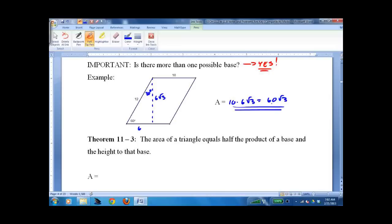Or I can say this is the base, and I need to figure out the height this way. This is 60 degrees, it's a parallelogram. This is 30 degrees, that's 10, this is 5, this is 5 root 3, so the area would be 12 times 5 root 3, 60 root 3. So be aware that you may have to look at these problems in different ways. That's it.